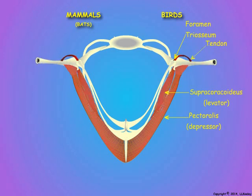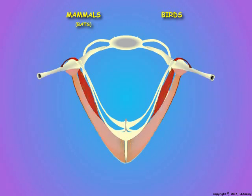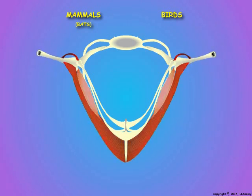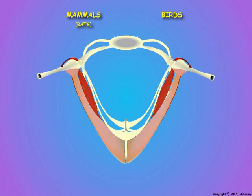The depressor and levator muscles of the bird are highlighted alternately as they repeat several wing beats.